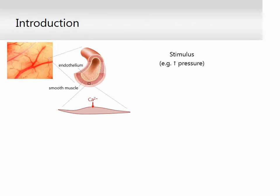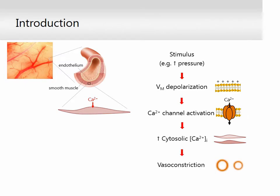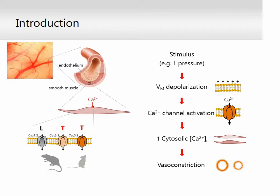In particular, a vasoactive stimulus such as an increase in intraluminal pressure can elicit smooth muscle depolarization and subsequent activation of calcium channels. A rise in cytosolic calcium concentration follows and leads to arterial constriction. The identity of calcium channels involved in this cascade has been recently revised with the identification of T-type calcium channel subtypes, in addition to the well-established role for the L-type CAV 1.2 channels.